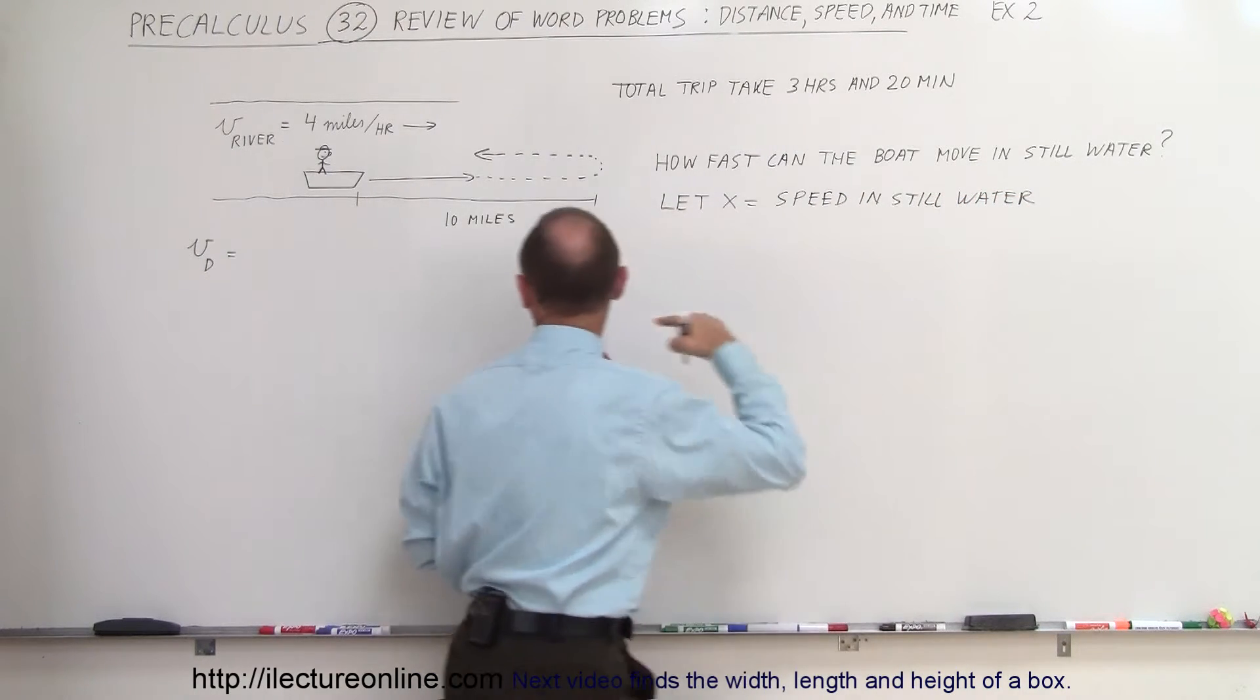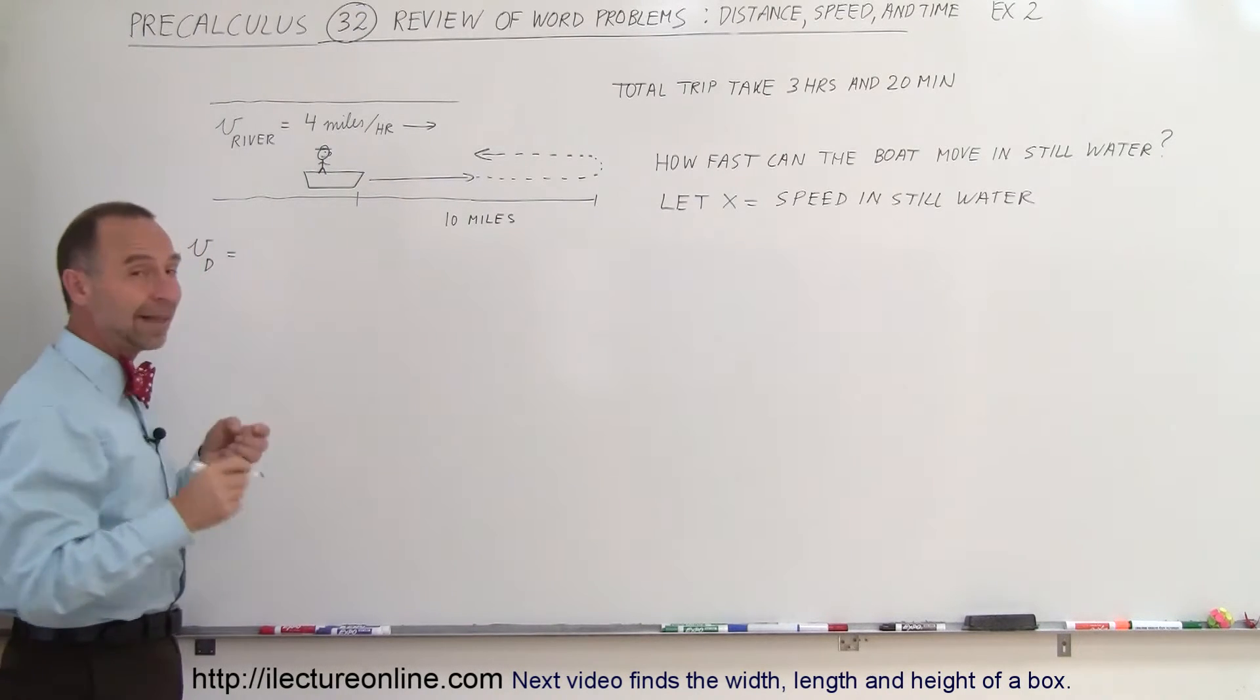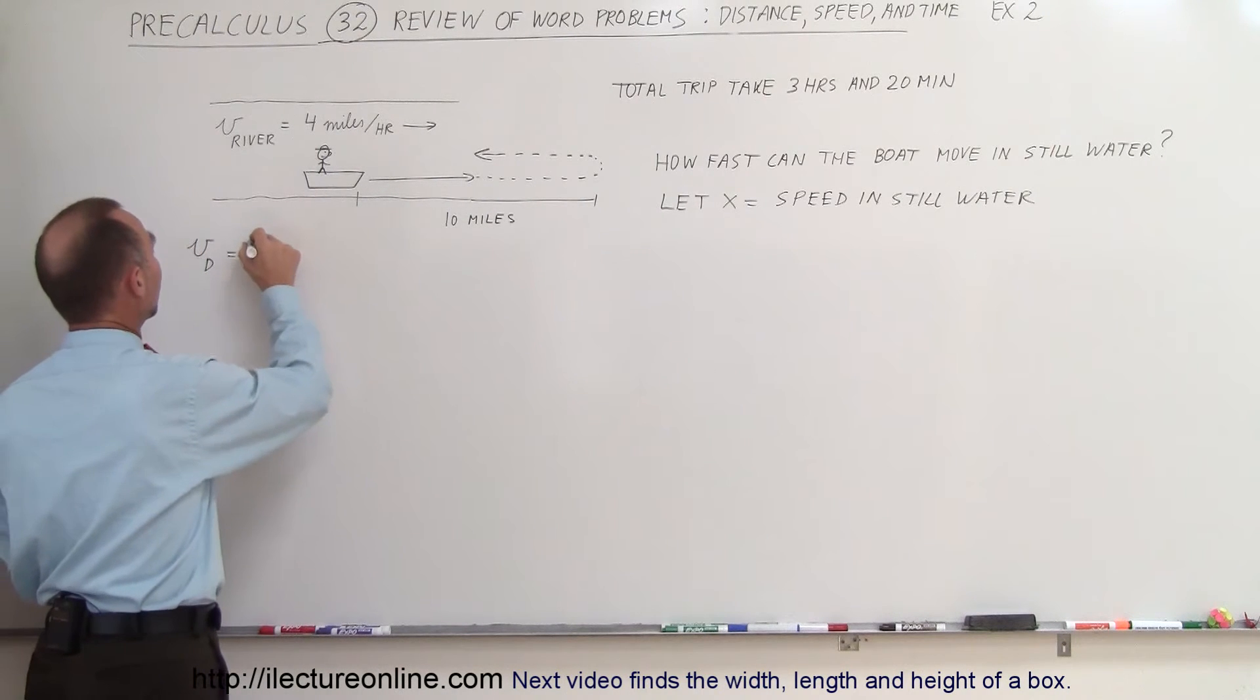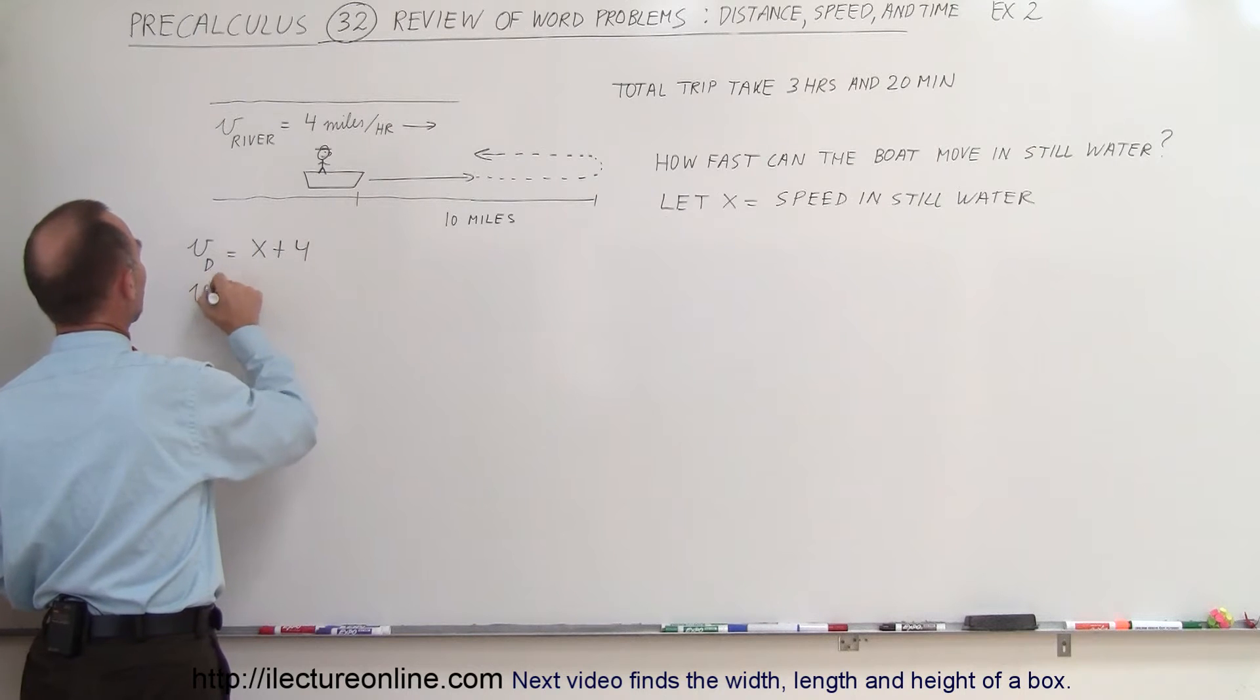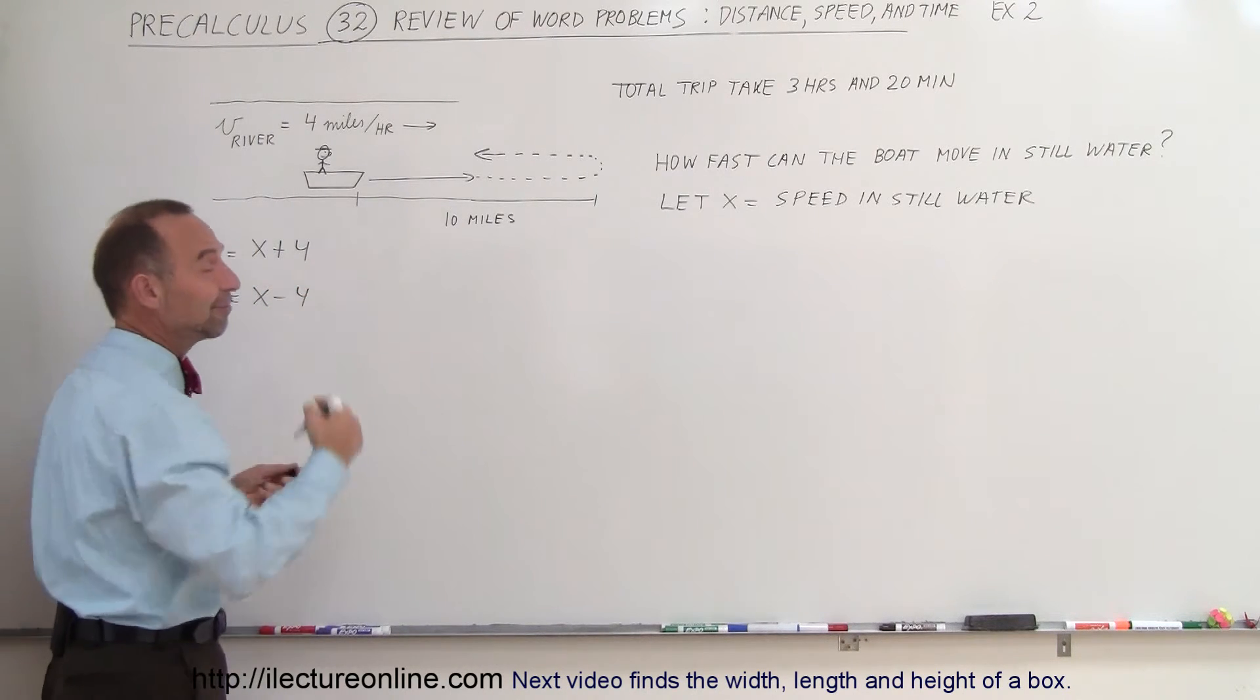We're then solving for x. The velocity downstream will then be x plus the speed of the river, which would be 4. And the velocity upstream would be x minus 4 because then you would be fighting the current.